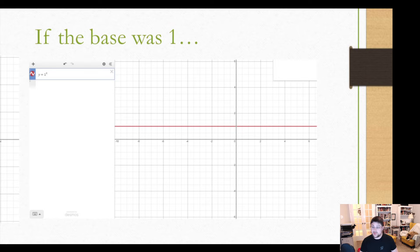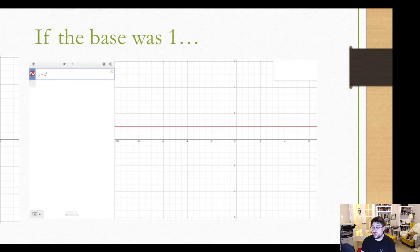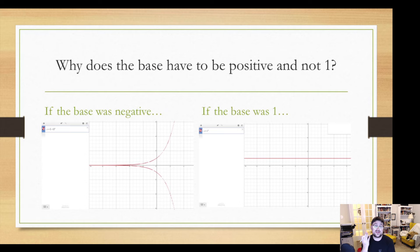Also, if your base is one, well, one to any power is one. This is just boring. We don't have an exponential graph. We have a flat line. So we just kind of say, nah, let's not. That's why we can't use negative bases or a base of one.